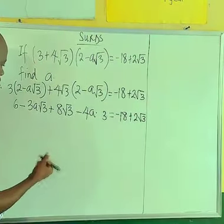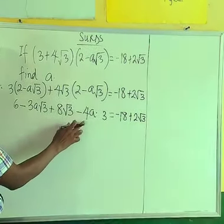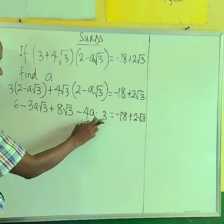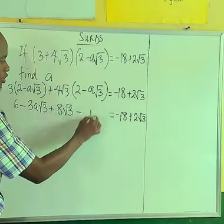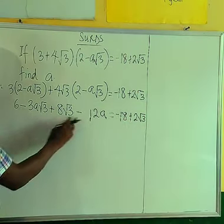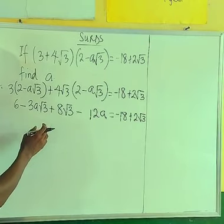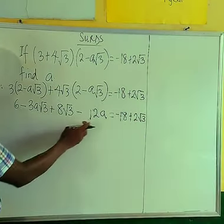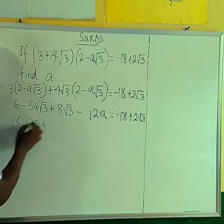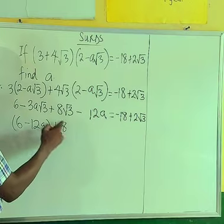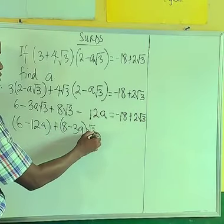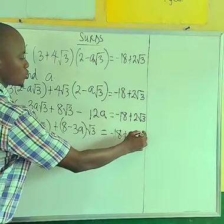Now we collect like terms. The constant terms give us 6 minus 12a, and the surd terms give us 8 minus 3a, multiplied by √3. So the equation becomes: (6 - 12a) + (8 - 3a)√3 = -18 + 2√3.